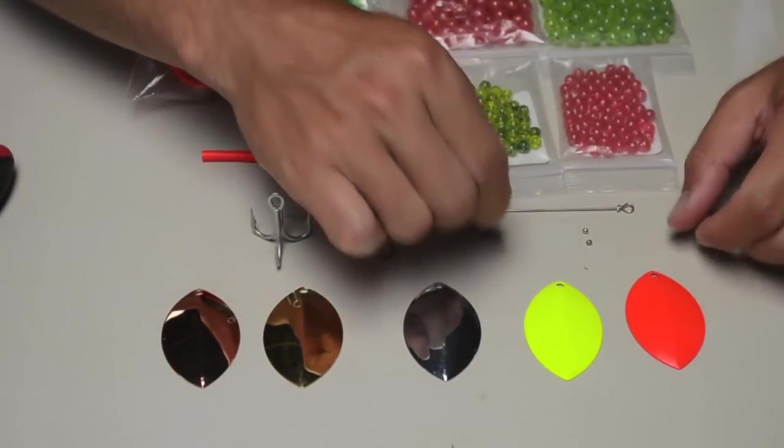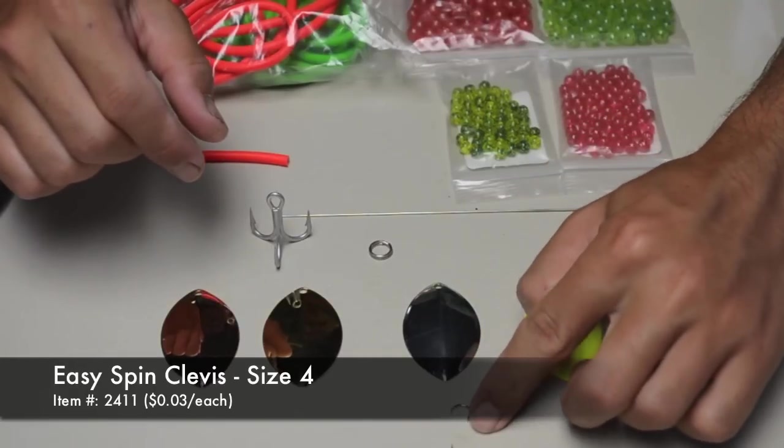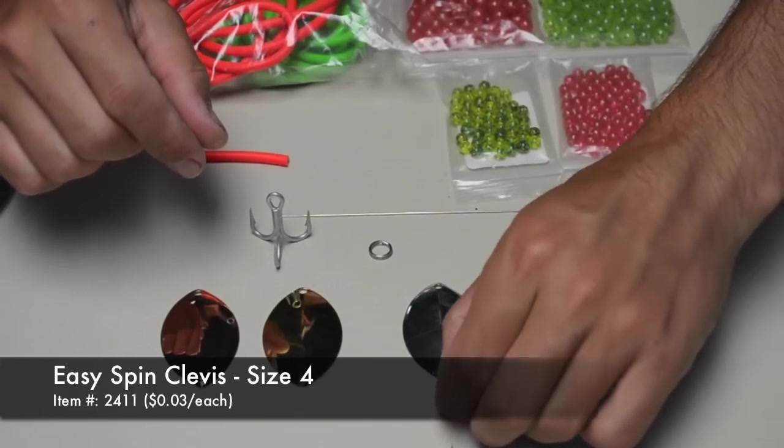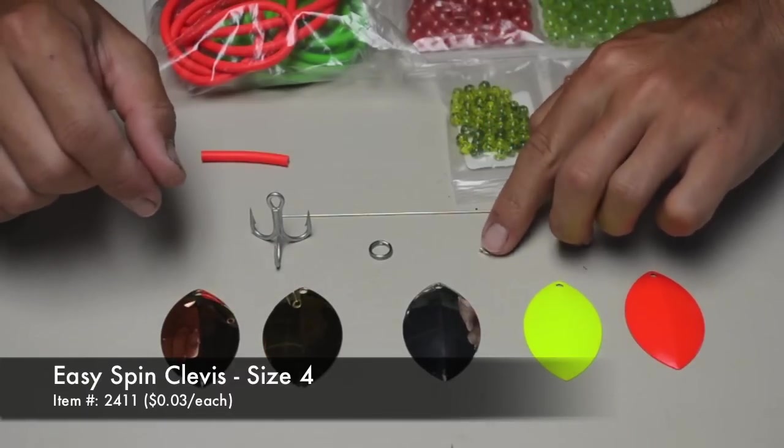The blade is held on by a number 4 clevis, nickel plated. These are fairly inexpensive, only about 3 cents a pop and that's a size 4 clevis.